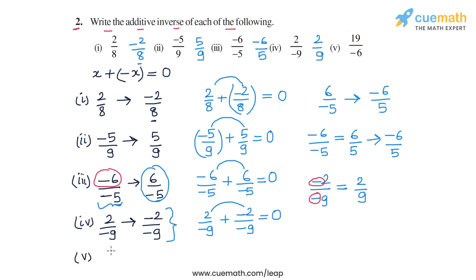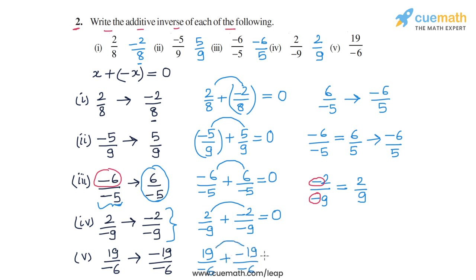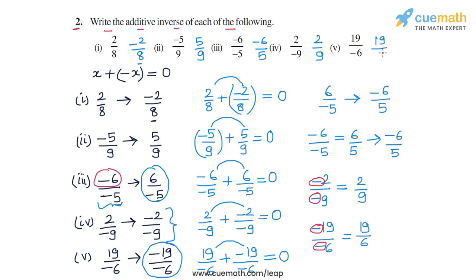Finally, in part five, the number is 19/-6. We invert the sign of the numerator to get -19/-6. We can check: 19/-6 plus -19/-6 — the numerators will add to zero, so we get zero. Once again, we can cancel out the negative signs from both numerator and denominator, writing it as 19/6. So the required additive inverse in part five is 19/6. This completes all five parts of question number two.